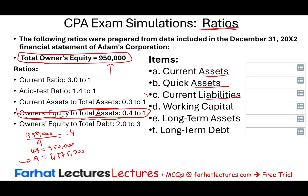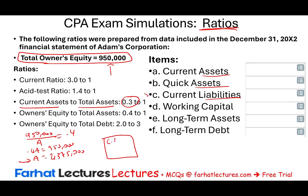On the balance sheet, you have current assets and long-term assets. Current assets represent 0.3 of total assets, and long-term assets represent 0.7, which together equal 1 — the full total assets of $2,375,000. Since current assets represent 30% of that, we multiply: $2,375,000 × 0.3 = $712,500. So current assets are $712,500.